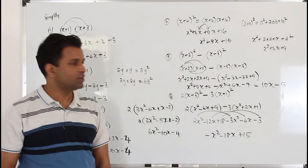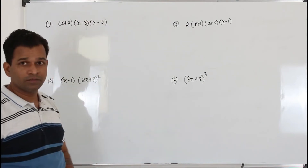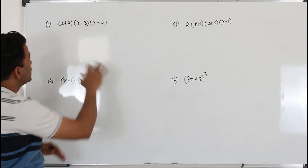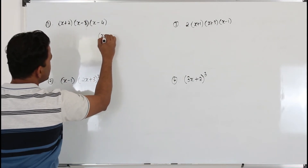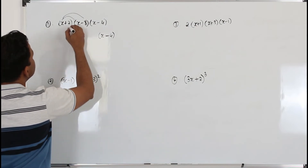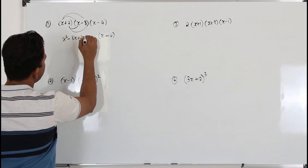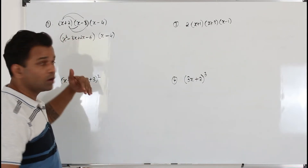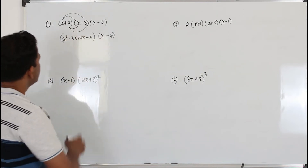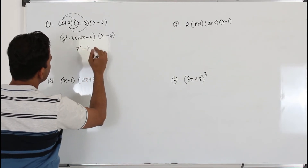So this all comes under simplification — there are several types. Here is another type where you have three factors. First take any two — you can take the first two, the last two, or the first and third. I'll take the first two and keep the last one as it is. Multiply the first two as usual: take x and multiply both, take 2 and multiply both. You get x square minus 3x plus 2x minus 6. Put a bracket around it — brackets are very important. Simplify: x square minus 1x minus 6.